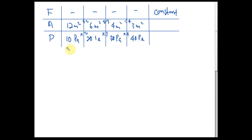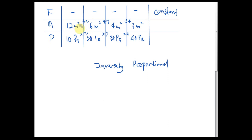This kind of relationship is called inversely proportional. When the area is reduced by 2 times, the pressure increases by 2 times. When the area is reduced by 3 times, the pressure increases by 3 times. When the area is reduced by 4 times, the pressure increases by 4 times. This is called inversely proportional.